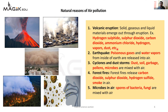Second reason hota hai - earthquakes. Earthquakes bhi air pollution cause karti hai. Jab earthquake hota hai to aapne dekha hoga ki hamaari earth ke surface pe bahut saari cracks aa jaati hain, aur un cracks mein se earth ke andar jo poisonous gases and water vapors hote hain woh bahar niklne shuru ho jaate hain. Yeh poisonous gases jo earth surface ke niche dabay hote hain, jab earthquake aata hai to cracks aa jaati hain aur un cracks mein se yeh poisonous gas bahar nikalta hai aur air ko pollute kar deta hai.